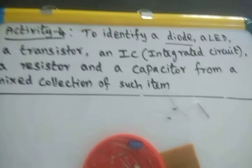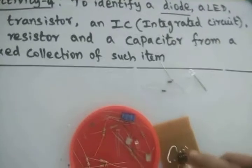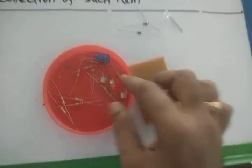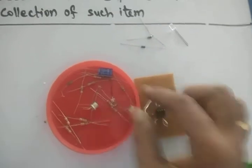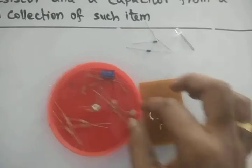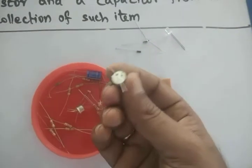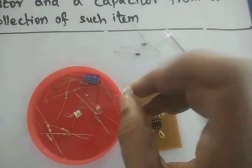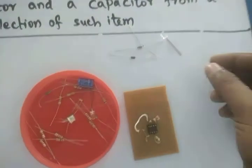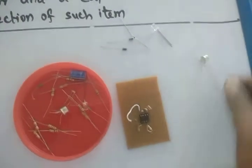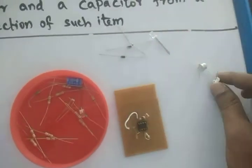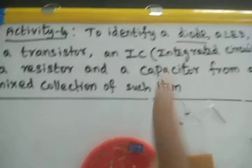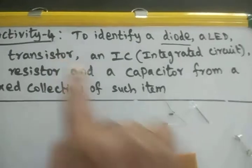Next is the transistor. So this is a transistor. There are two transistors given here. So we have identified: diode, LED, transistor, and next is the integrated circuit.